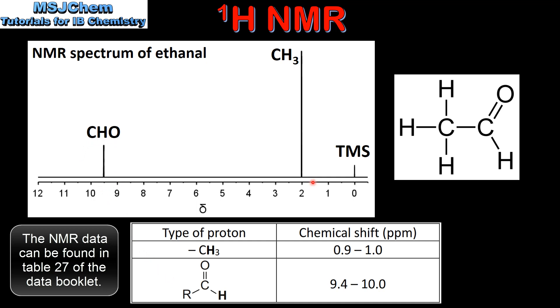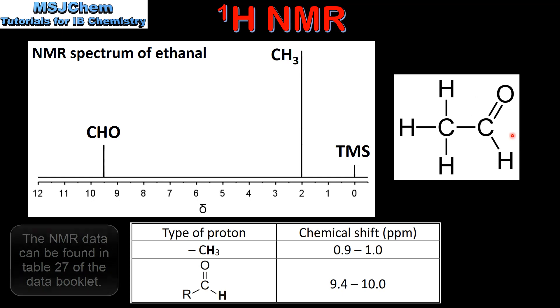The peak at 2 ppm corresponds to the three hydrogen atoms in the CH3 group. If we look at the structural formula of ethanal we can see it's composed of a CH3 group and an aldehyde group.